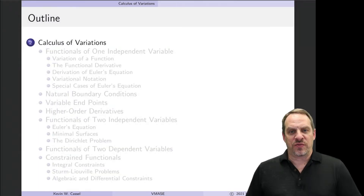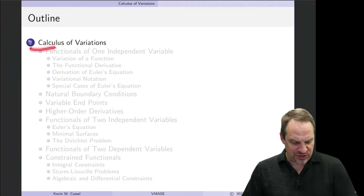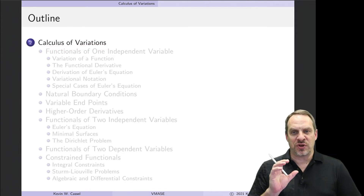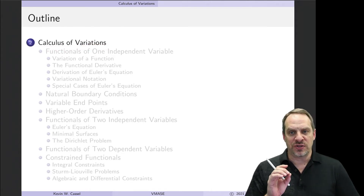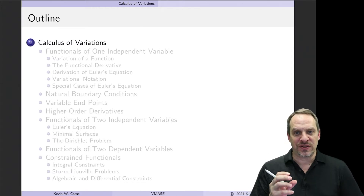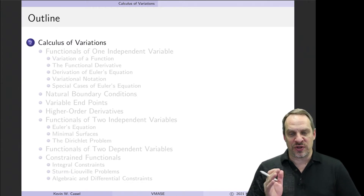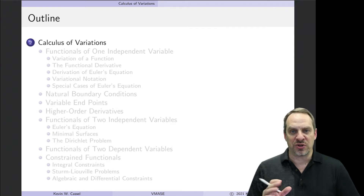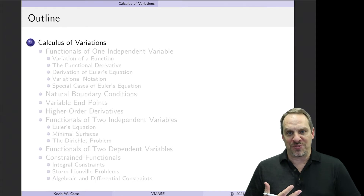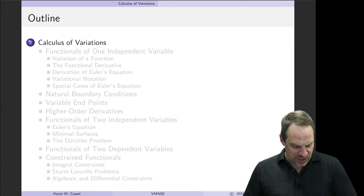With the preliminaries out of the way from the previous videos, now we're ready to get into the calculus of variations itself. This chapter, chapter 2, is really the heart of the entire subject. It is actually all the mathematics that's necessary to solve and address all the applications and problems throughout the remainder of the book. So this is really the heart of the subject — variational methods — in terms of the mathematical methods.